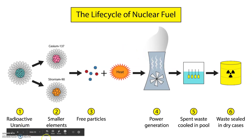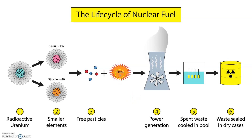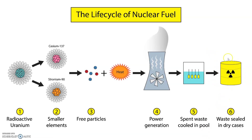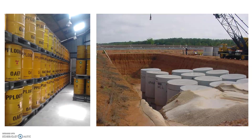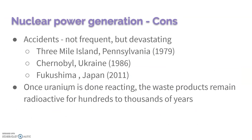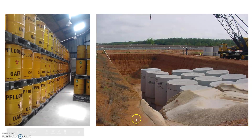Looking at the life cycle of nuclear fuel: once the uranium is done reacting and has turned into smaller elements, we first cool it off and then seal it in dry cases — typically cement or lead. Then we have to find a good place for them, whether in heavily guarded warehouses or buried underground. They're going to remain radioactive for hundreds of thousands of years. It's not a great solution, but it's the best we have for now.